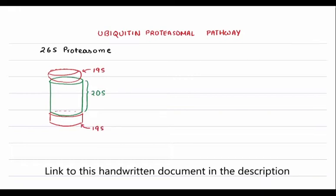Both of them make up the 26S complex. Now this 20S complex is composed of 28 subunits, which are encoded by 14 different genes.